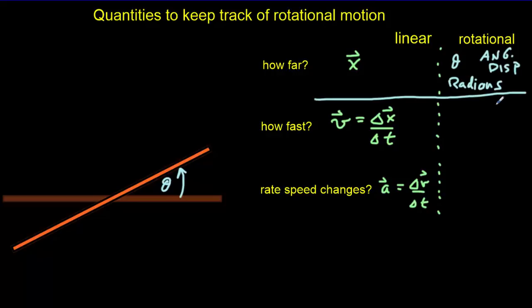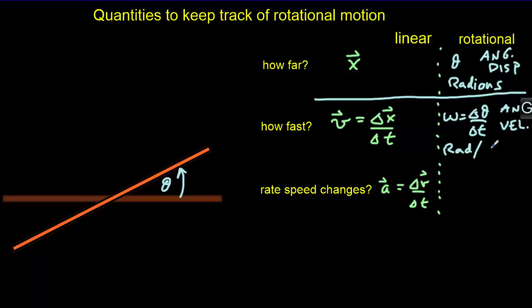Secondly, we'd like to know how fast our object is rotating. We keep track of that using a quantity omega, called the angular velocity. It's the same omega we used in simple harmonic motion where we called it the angular frequency — really one and the same. It's going to be equal to the rate of change of angular displacement, and its units are radians per second.